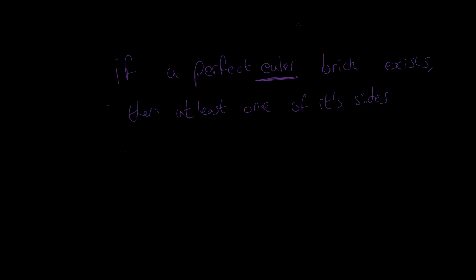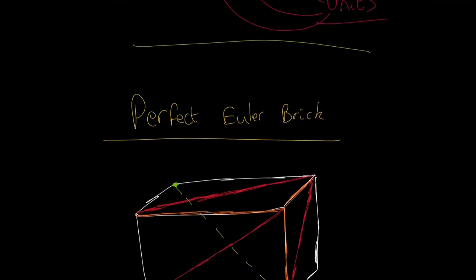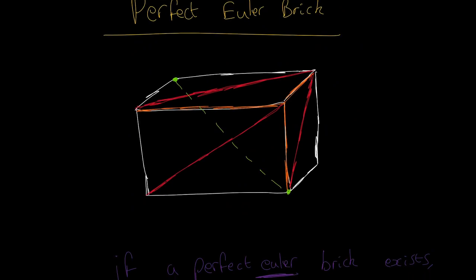At least one of its sides is greater, drum roll please, it is greater than one trillion units. One trillion units, so one of the sides that is, so it is greater than one trillion, so thousand, million, billion, one trillion units. That's much bigger than the numbers that we've been dealing with here.